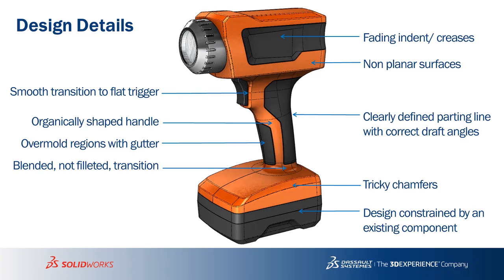At the top, we have a fading indent with a chamfer that washes out — it fades to nothing. We have a complicated, organically-shaped handle with a smooth transition to the flat trigger area. We have an over-mold region along with a gutter for proper shutoff. And at the bottom, we have a blended, not filleted, transition.